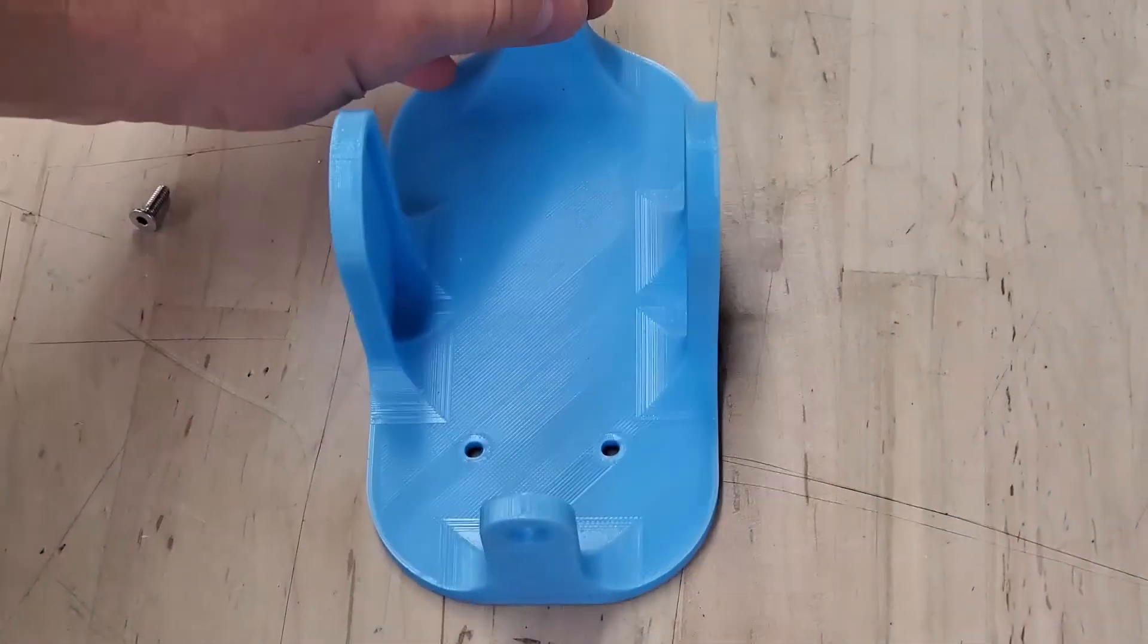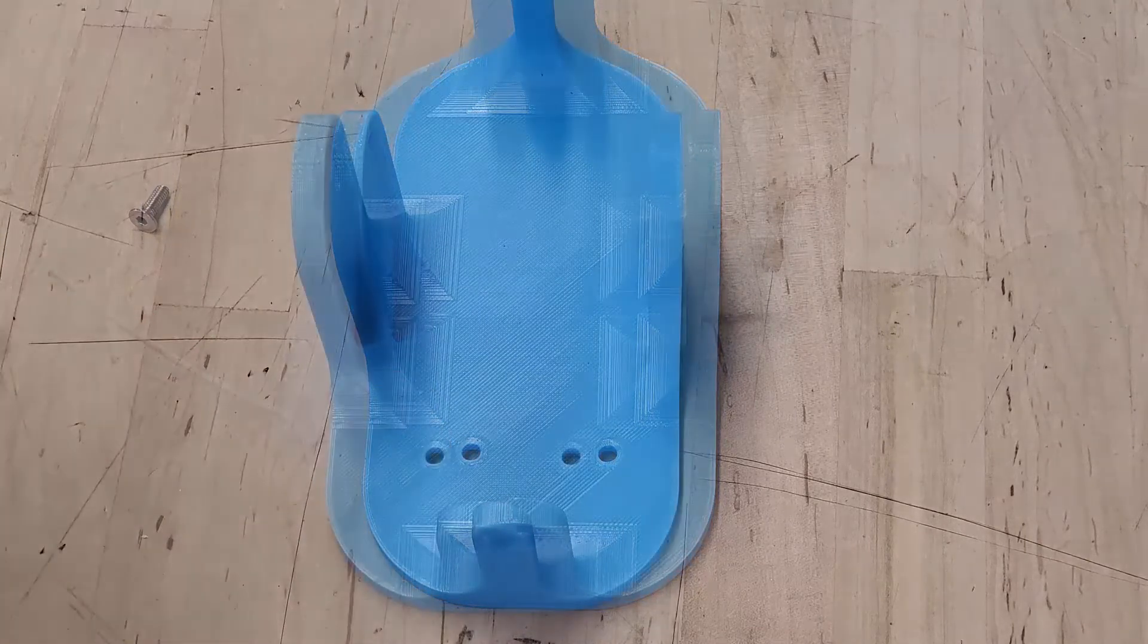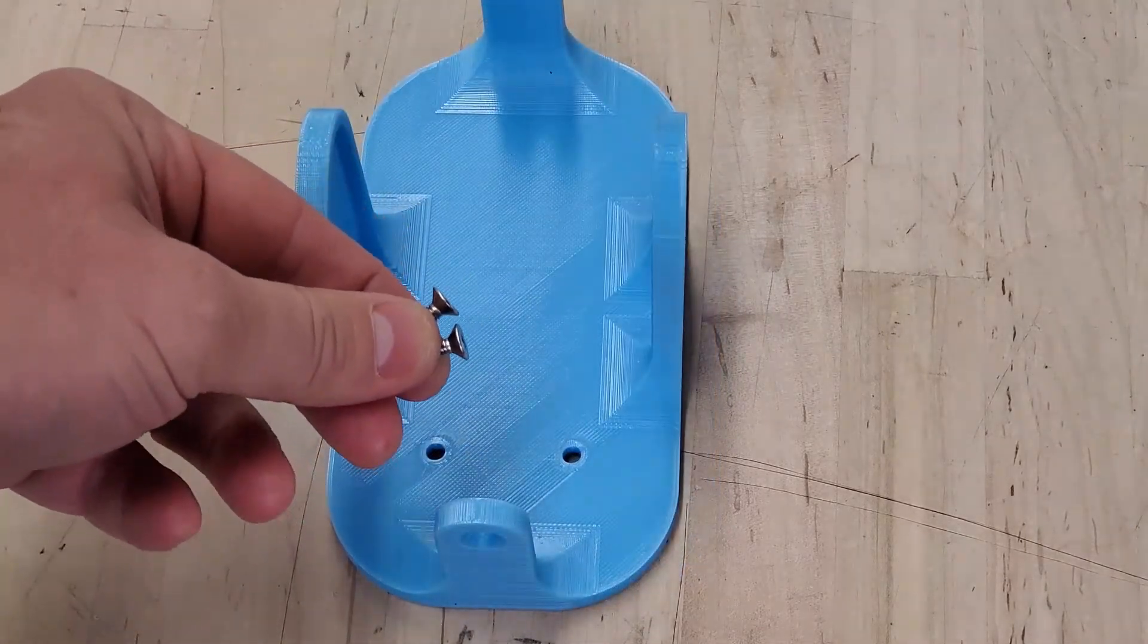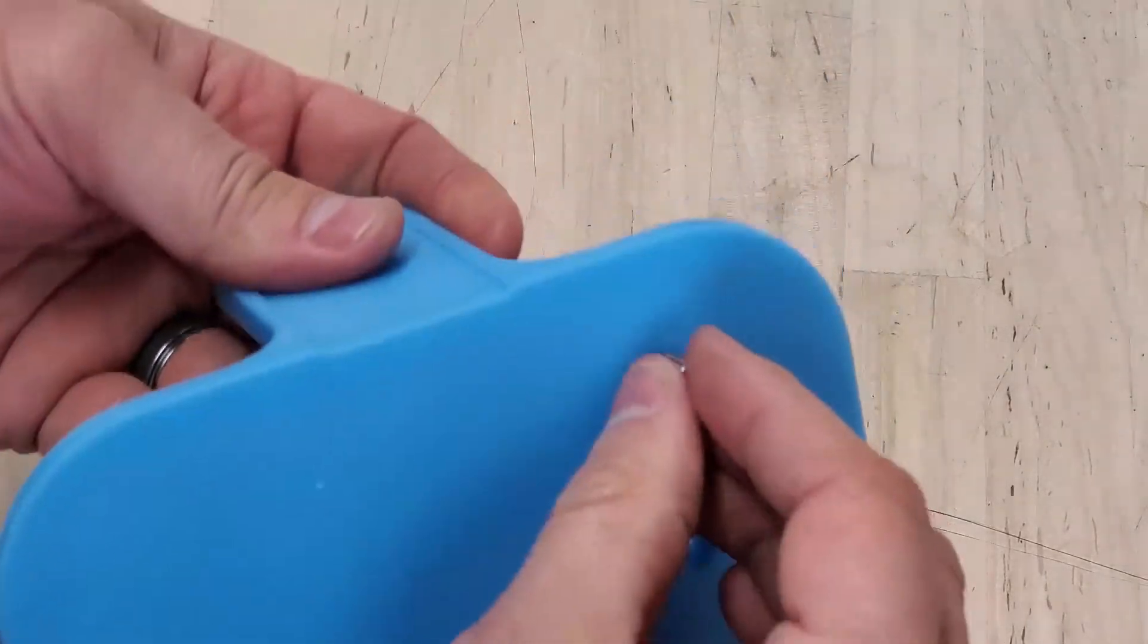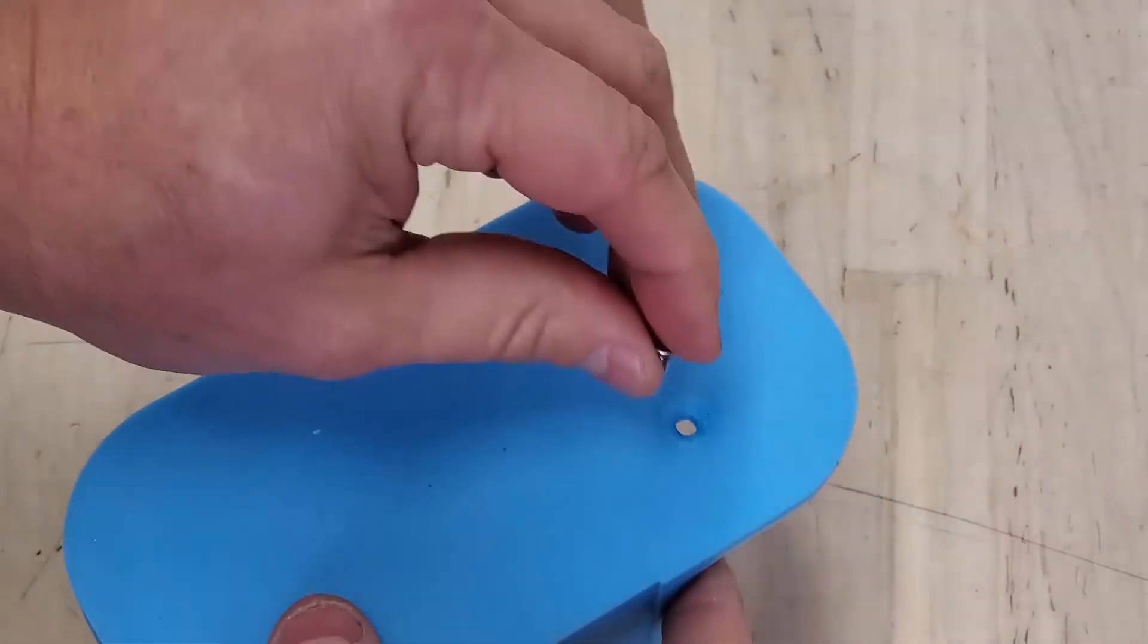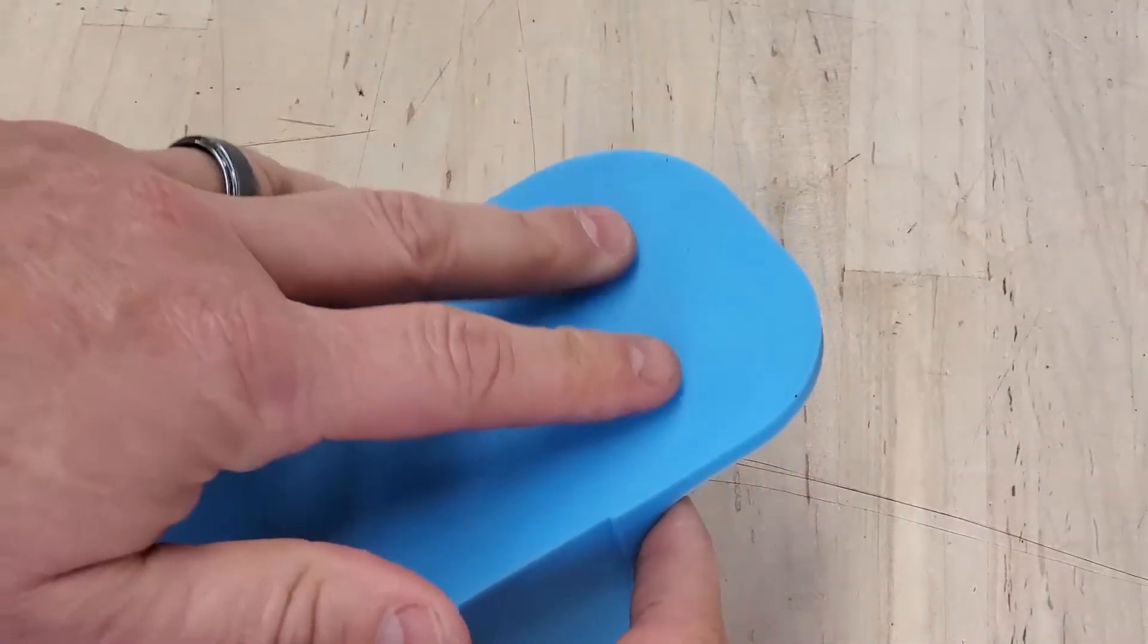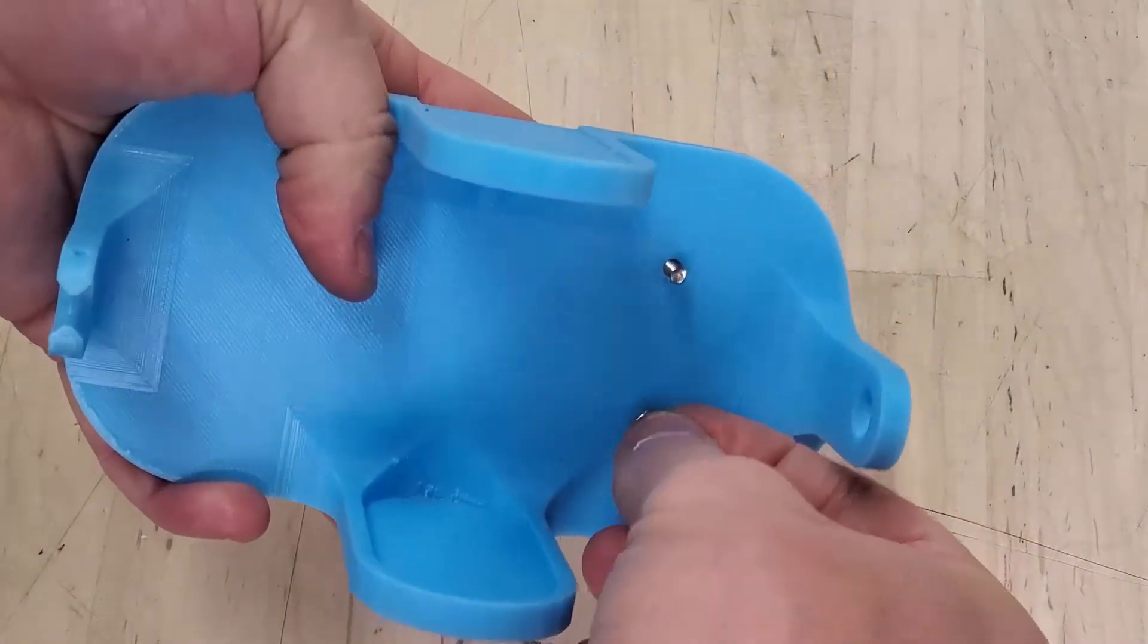Grab your 3D printed motor platform or base here. Now we're going to start constructing our motor terminals and brushes. Take your two countersink M4 bolts and place them through these two holes. Flip it over and screw on the nuts.